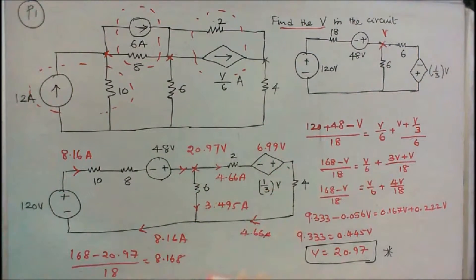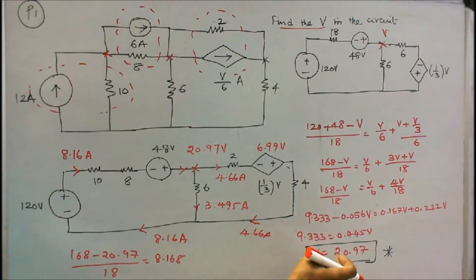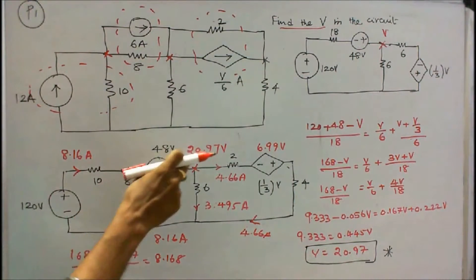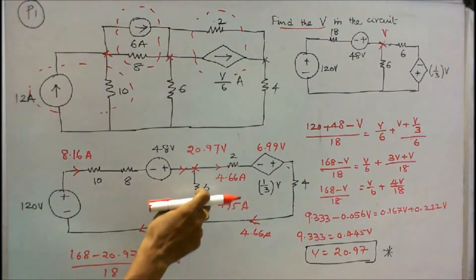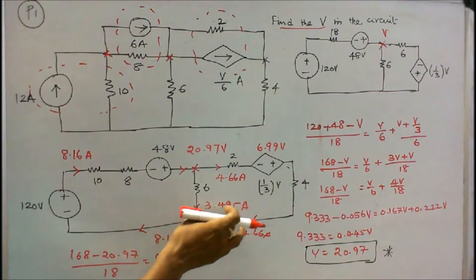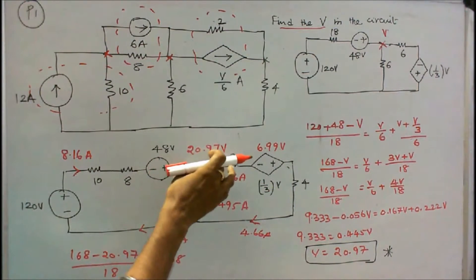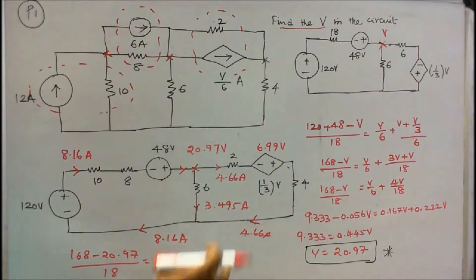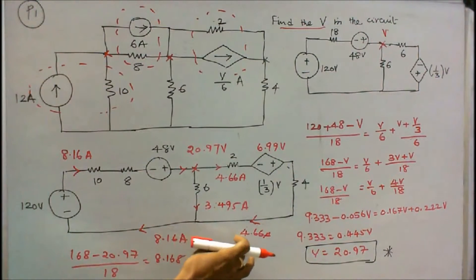I simplify the equation. I got 9.33 is equal to 0.445V. I can find V is equal to 20.97. So current flow in the 6 ohm resistor is 20.97 divided by 6, that is equal to 3.495 amps. In this circuit, 20.97 plus 6.99 divided by 6 (that is the 6 ohm resistor, that is 2 plus 4) is equal to 4.66 amps.